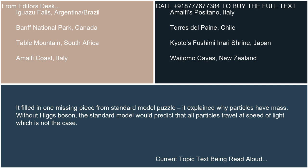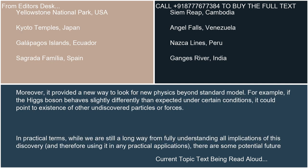It provided experimental evidence to back up theoretical calculations that were made over 50 years ago. It filled in one missing piece from the Standard Model puzzle — it explained why particles have mass. Without the Higgs boson, the Standard Model would predict that all particles travel at the speed of light, which is not the case. Moreover, it provided a new way to look for new physics beyond the Standard Model. For example, if the Higgs boson behaves slightly differently than expected under certain conditions, it could point to the existence of other undiscovered particles or forces.